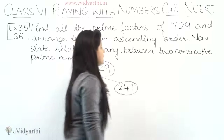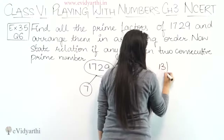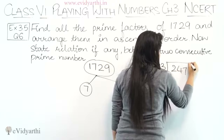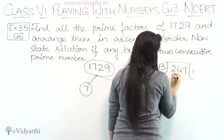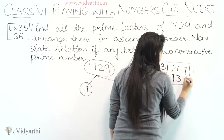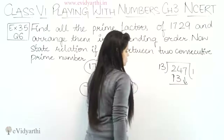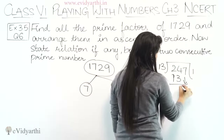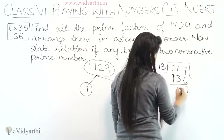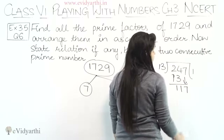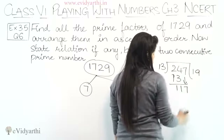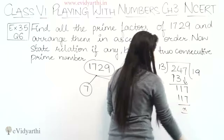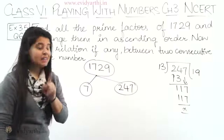Let's check 13. 13 divides 247: 13 × 19 = 247. We verify: 13 × 1 = 13, and 13 nines are 117, so 13 × 19 = 247. This confirms 247 is divisible by 13, giving us 13 × 19.